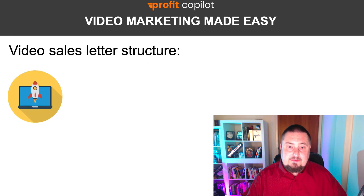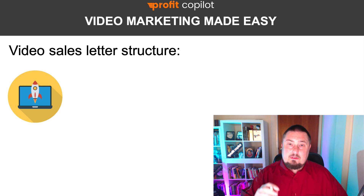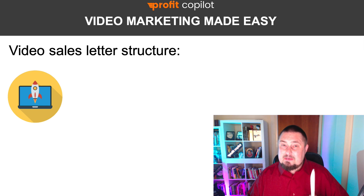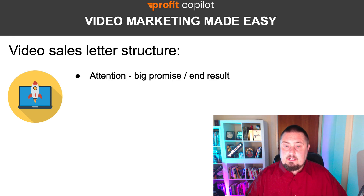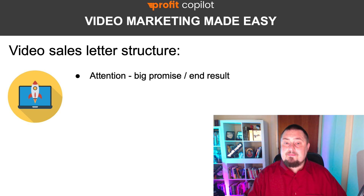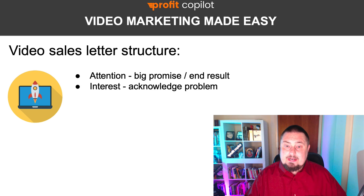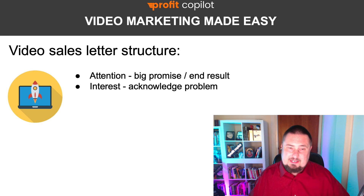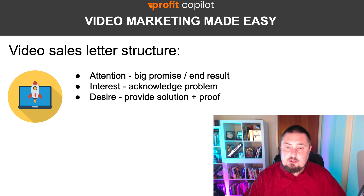Let's get down into the video sales letter structure — the VSL structure I use on all my videos. If you're familiar with Profit Copilot, you will have seen this structure used multiple times before, and that's because it works. So we use Attention — the very first thing your audience sees is something that grabs their attention, which can be a headline that promises a big end result. Then we need to trigger their Interest — the best way is to acknowledge whatever problem they're facing. You have to know who you're speaking to and what issues they need to overcome. Then provide the Solution plus Proof, which increases the desire for that solution.